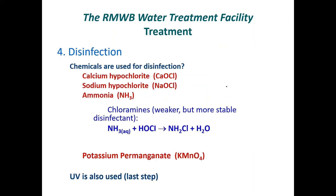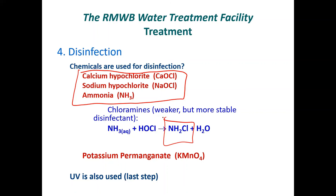For disinfection, they have a lot of different things going on. They make chloramines by mixing calcium and sodium hypochlorite with ammonia. I don't know exactly why they use both calcium and sodium hypochlorite, but basically that gets mixed with ammonia to make the chloramines. Ammonia is pretty noxious stuff — you don't want to be playing around with ammonia gas either. They also use potassium permanganate and, of course, UV.